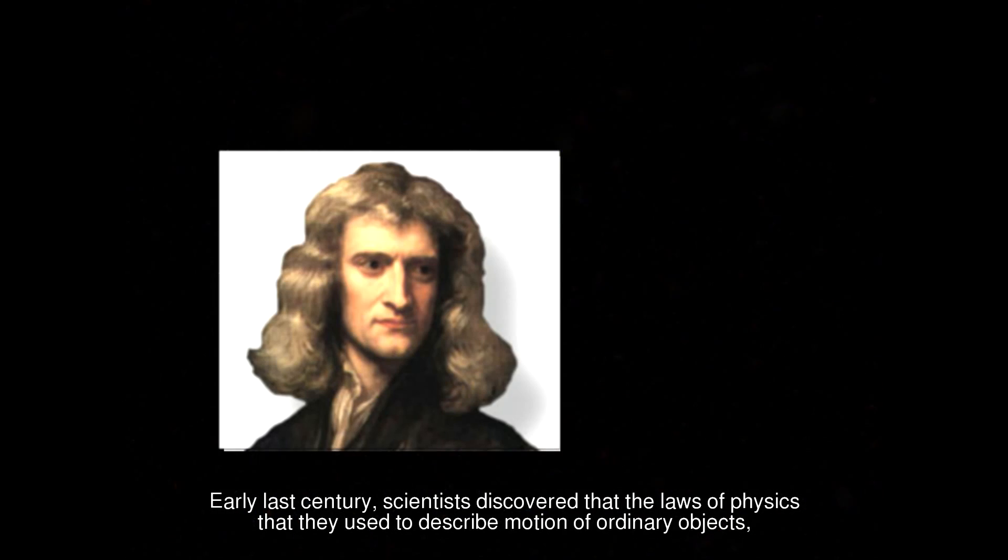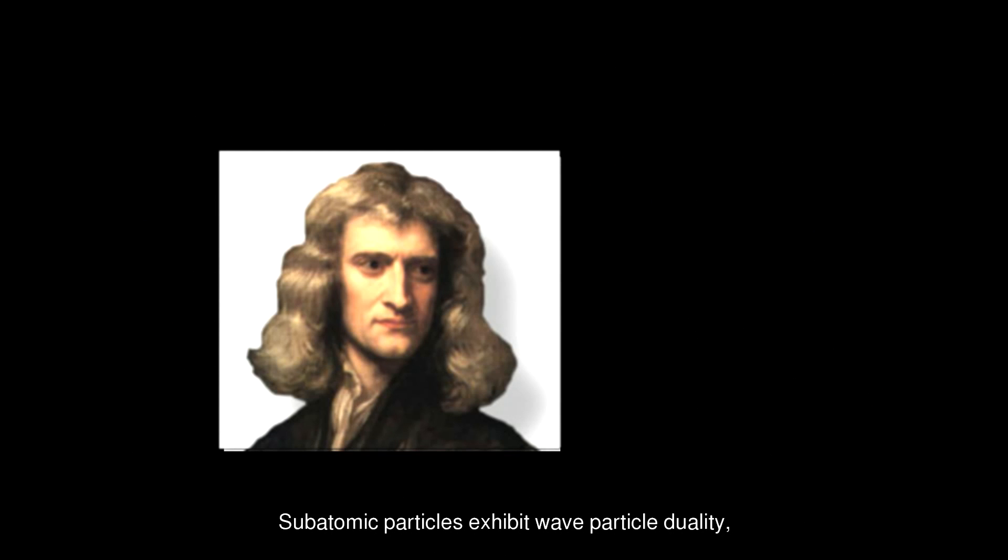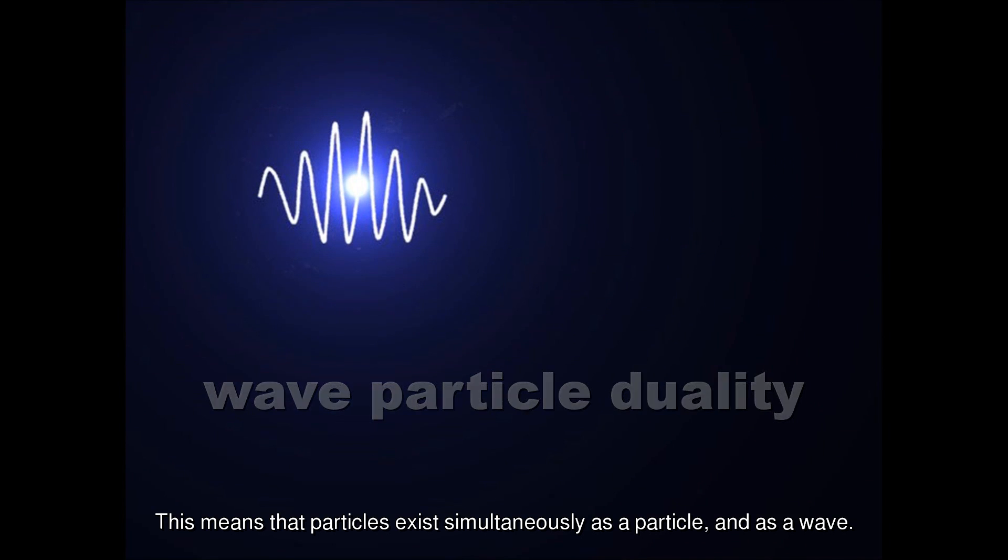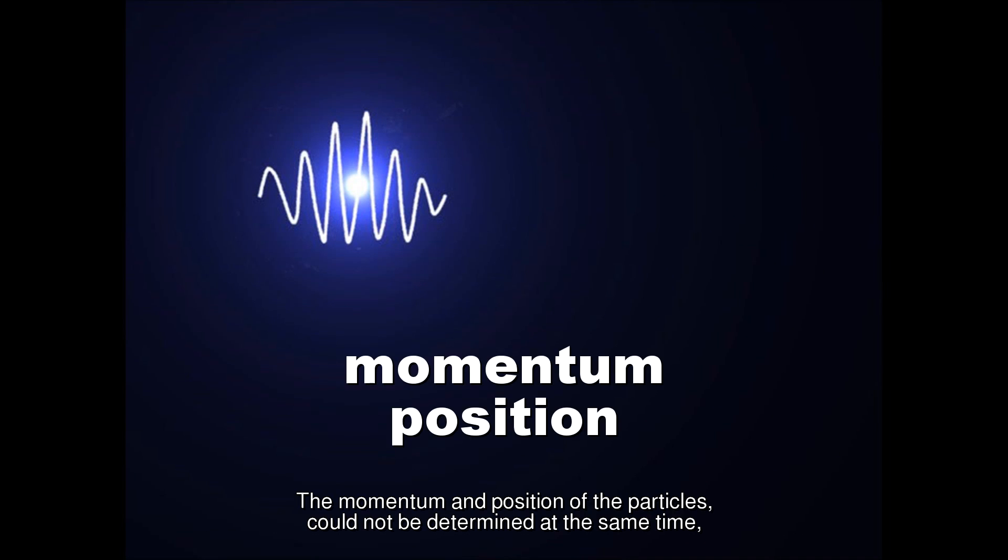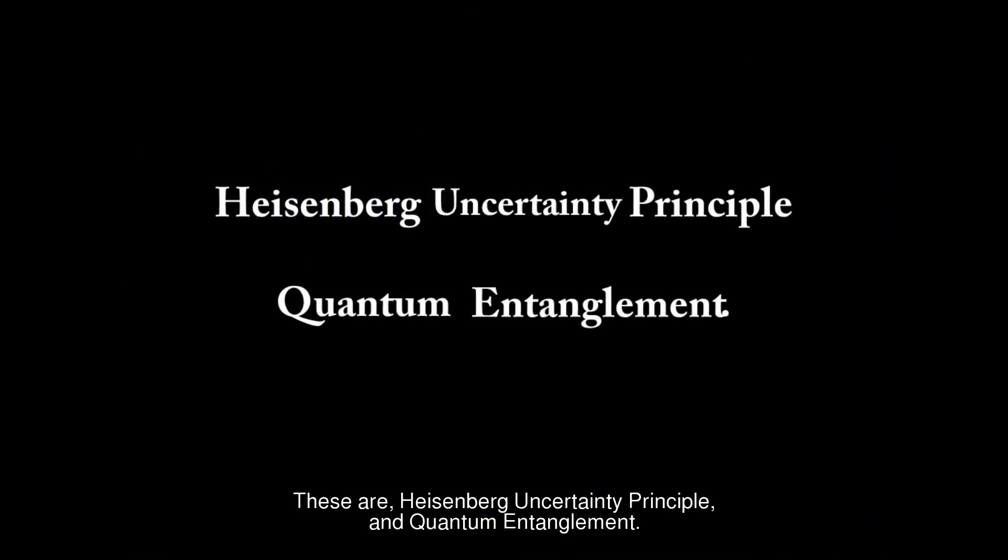Early last century, scientists discovered that the laws of physics that they use to explain motion of ordinary objects didn't appear to work at the subatomic level. Subatomic particles exhibit wave-particle duality. This means that particles exist simultaneously as a particle and as a wave. The momentum and position of the particles could not be determined at the same time, and the behavior of separate particles appear to be intertwined. These are Heisenberg uncertainty principle and quantum entanglement.